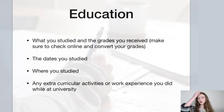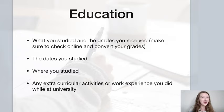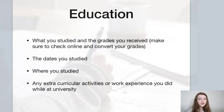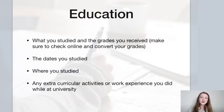The next part is education. You need to talk about what you studied and the grades you received. Make sure you check online and convert your grades. I've seen it time and again when proofreading CVs — people don't convert their grades and write something like 'I got a seven.' What does that mean? Is it seven out of a hundred? Seven out of ten? Seven out of seven? That number means nothing to a UK employer. Make sure you check online to see how your grades convert into the UK system.